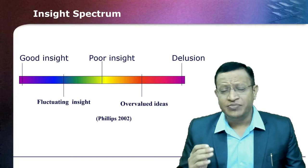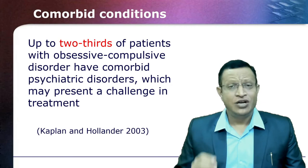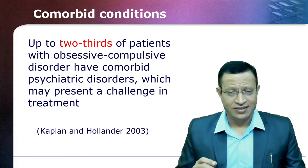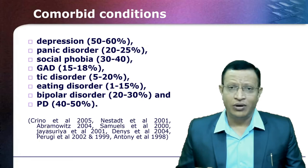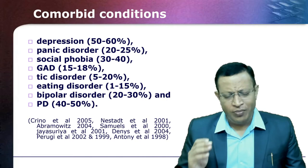Moving to comorbidity in OCD. Comorbidity is the rule in OCD. Two-thirds of OCD patients will have another psychiatric diagnosis. Please check for comorbidity such as depression, panic disorder, social phobia, generalized anxiety disorder, tic disorder, eating disorder, bipolar disorder, personality disorder, and substance abuse — these are common in OCD patients.